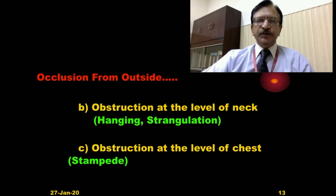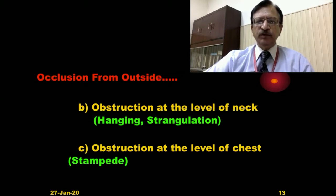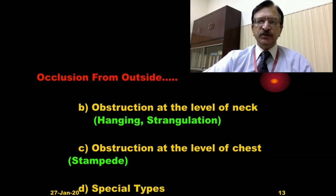Obstruction in the movement of the chest occurs in stampedes, where direct pressure from other persons compresses the chest and it is unable to move. This causes asphyxia because the chest cannot expand and the process of breathing in and out is not possible.